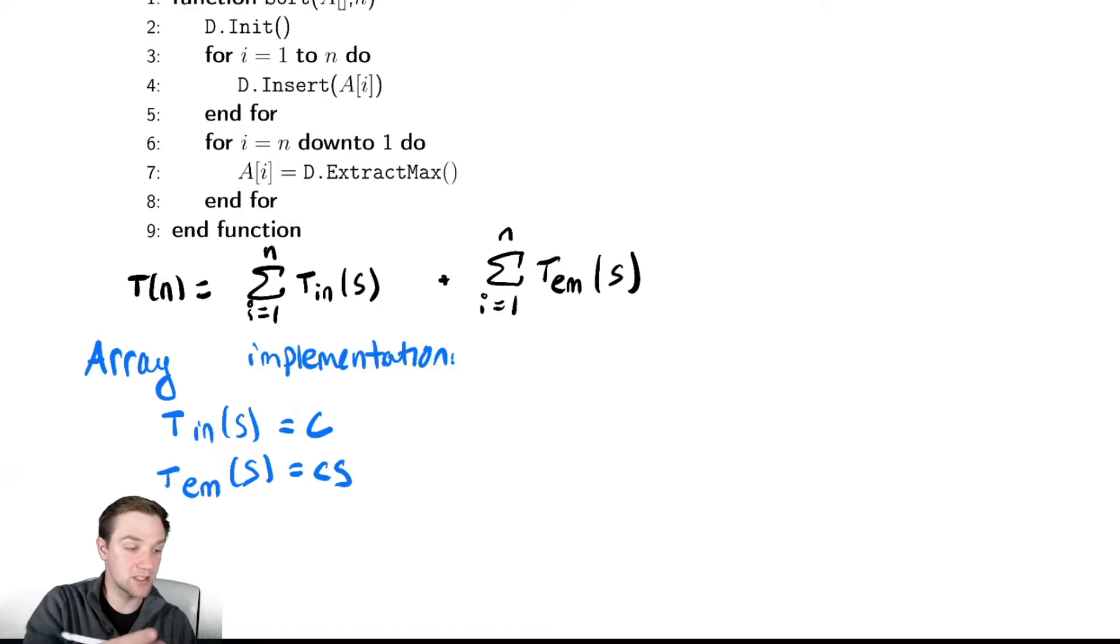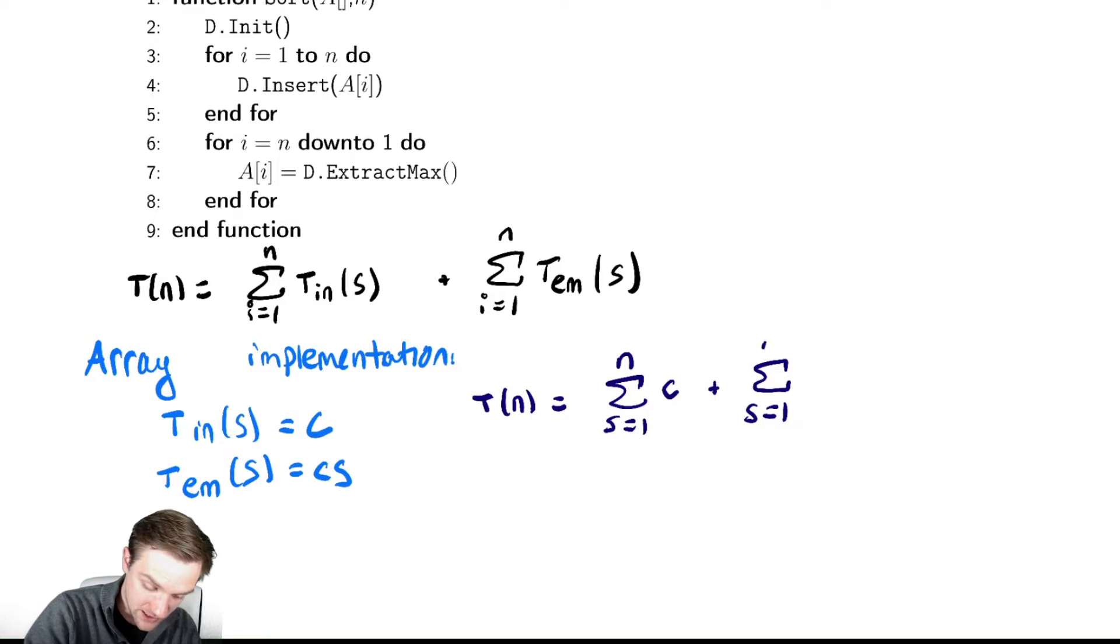In this case, exactly like we saw before, the summations can be re-expressed in terms of the size of the data structure. T of n equals the sum from s equals 1 to n of c, plus the sum from s equals 1 to n of cs. That last one only works out nicely because we're incrementing or decrementing s by 1. In the original loop, notice it was i equals n down to 1, which is different than i equals 1 to n. This is because we're always only removing one element, so we can re-express it this way by switching the order of summation.